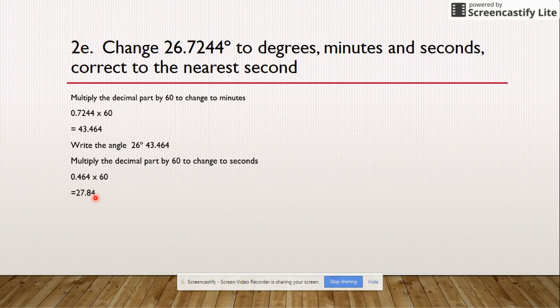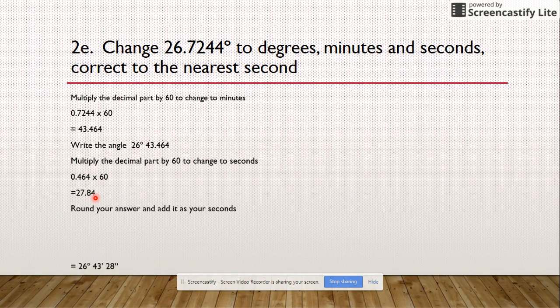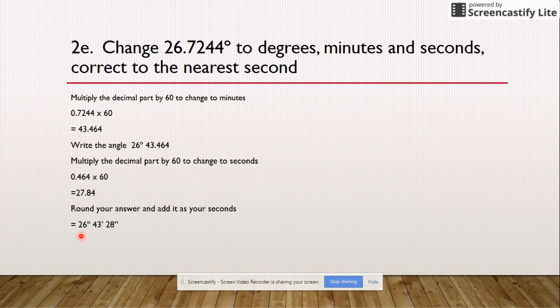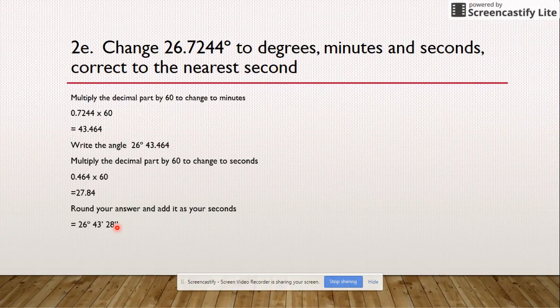Now we take our 0.464, we times that by 60, and we get 27.84. Because remember, we have to round, the 27.84 to the nearest whole number will give us 28. So therefore it's 26 degrees, 43 minutes, and 28 seconds. Enjoy!